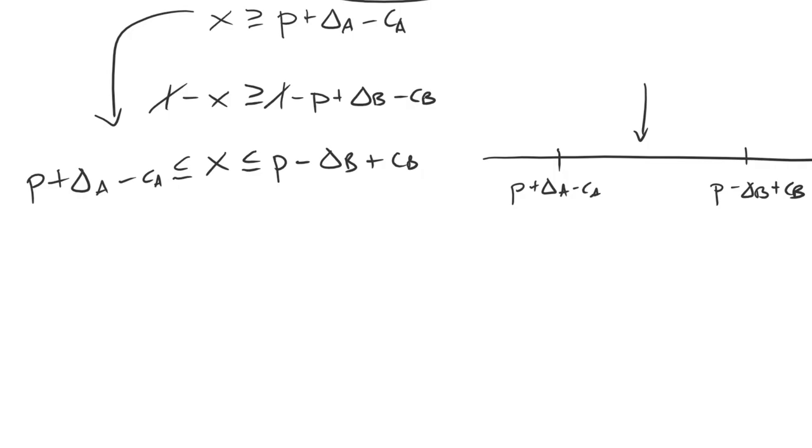If, however, this value is to the left of P plus delta A minus CA, then we're in trouble. We can't get a deal to work. Well, to answer that question, all we really need to do is cut out the middleman and check whether P plus delta A minus CA is less than or equal to P minus delta B plus CB.